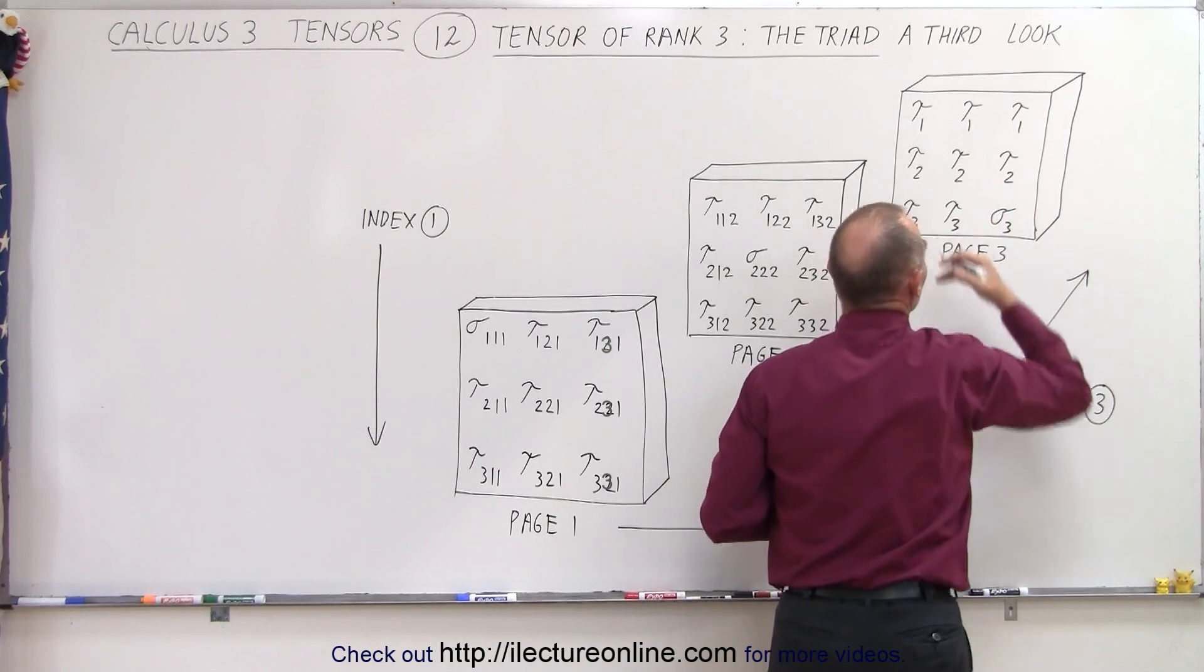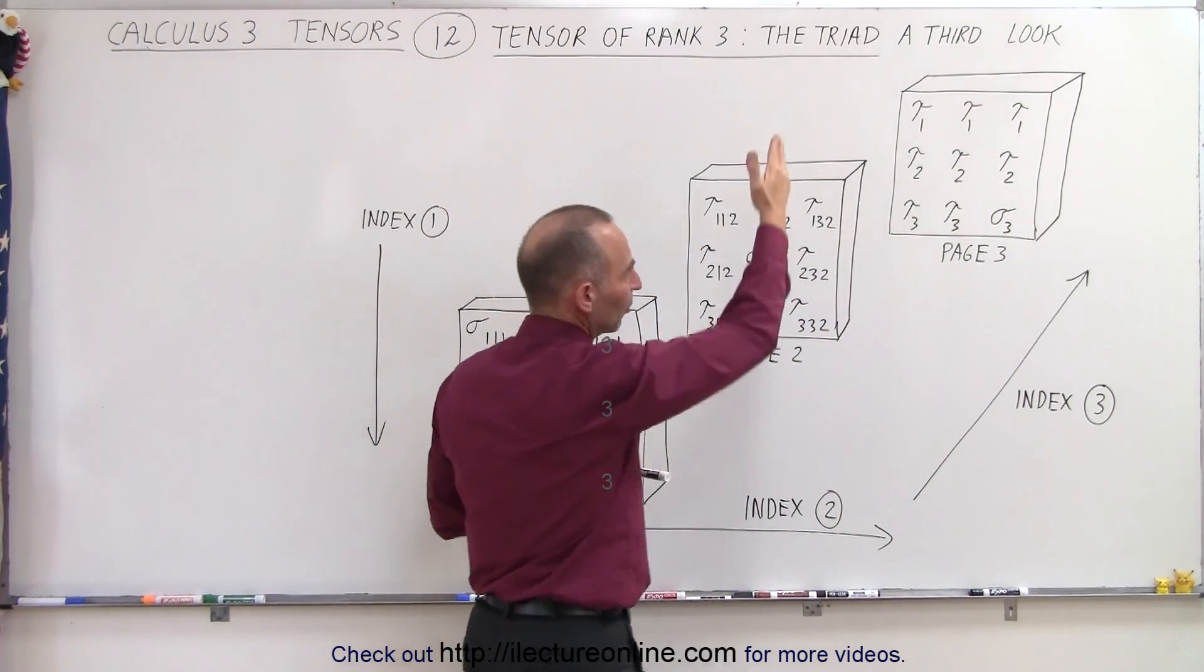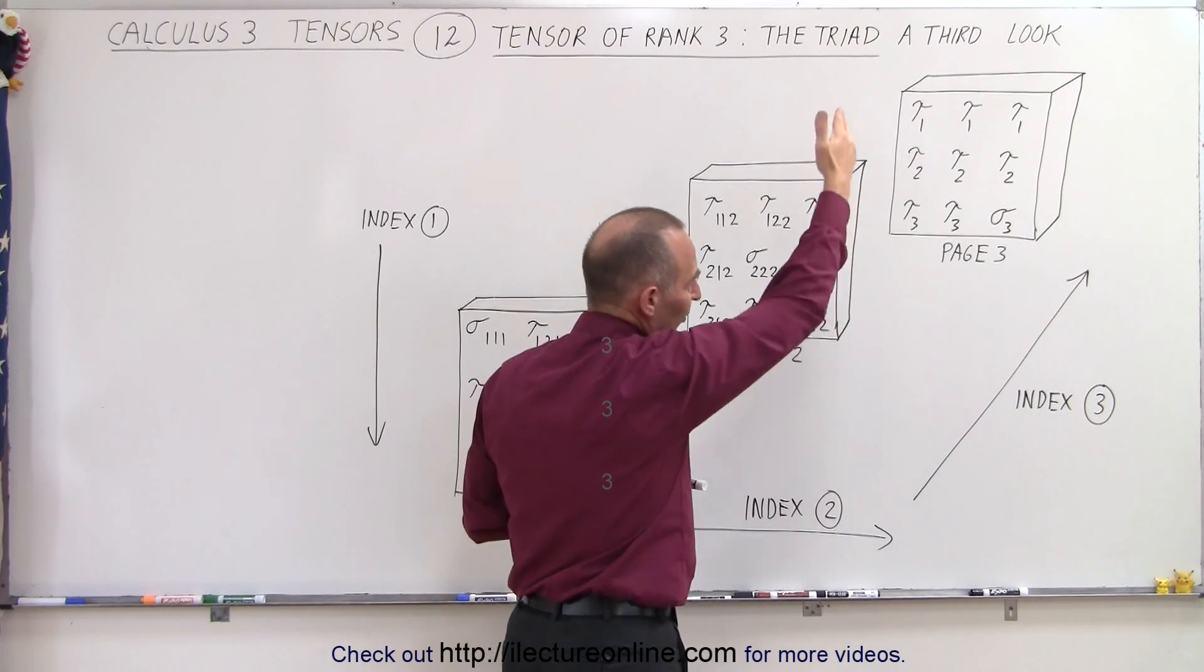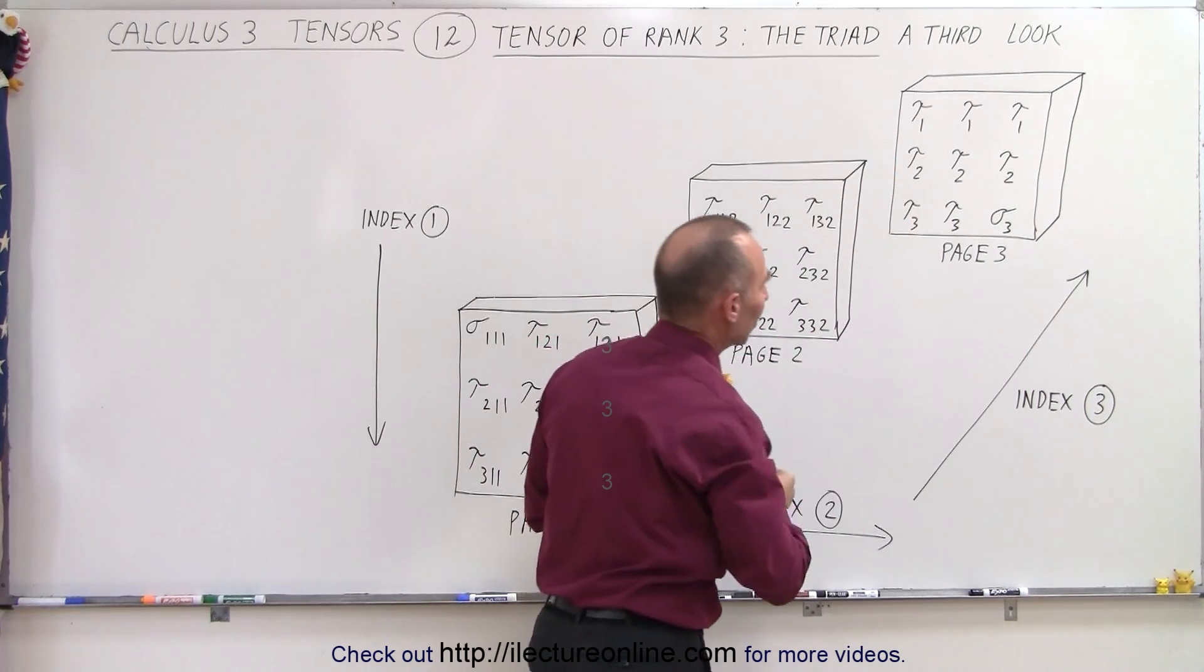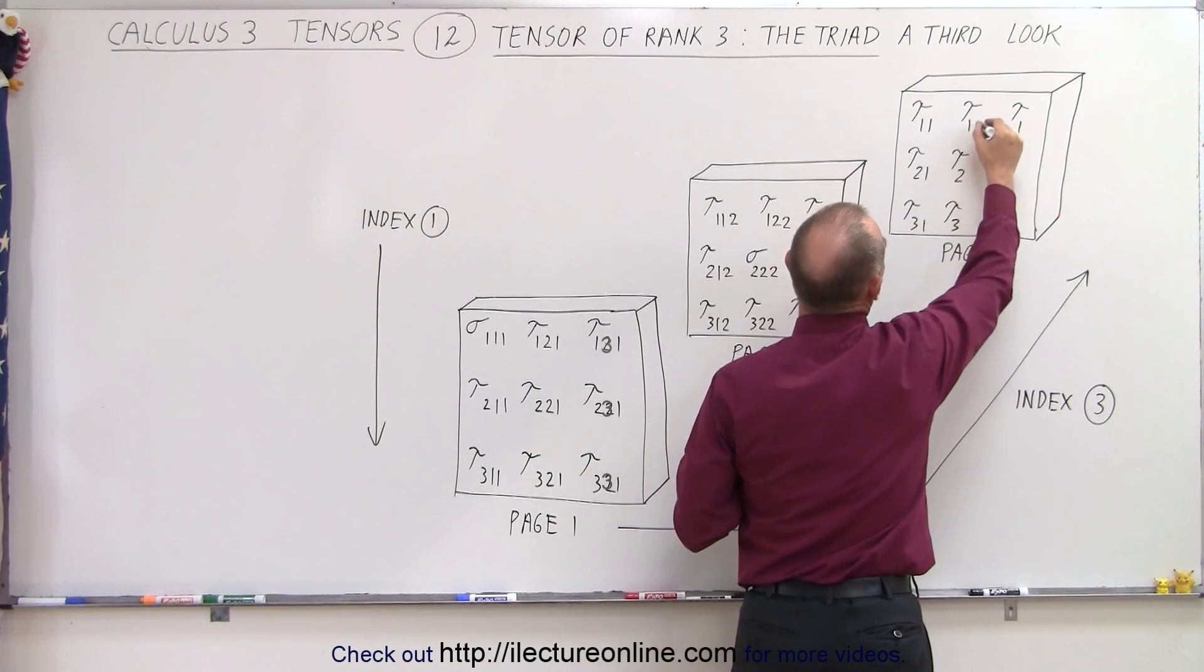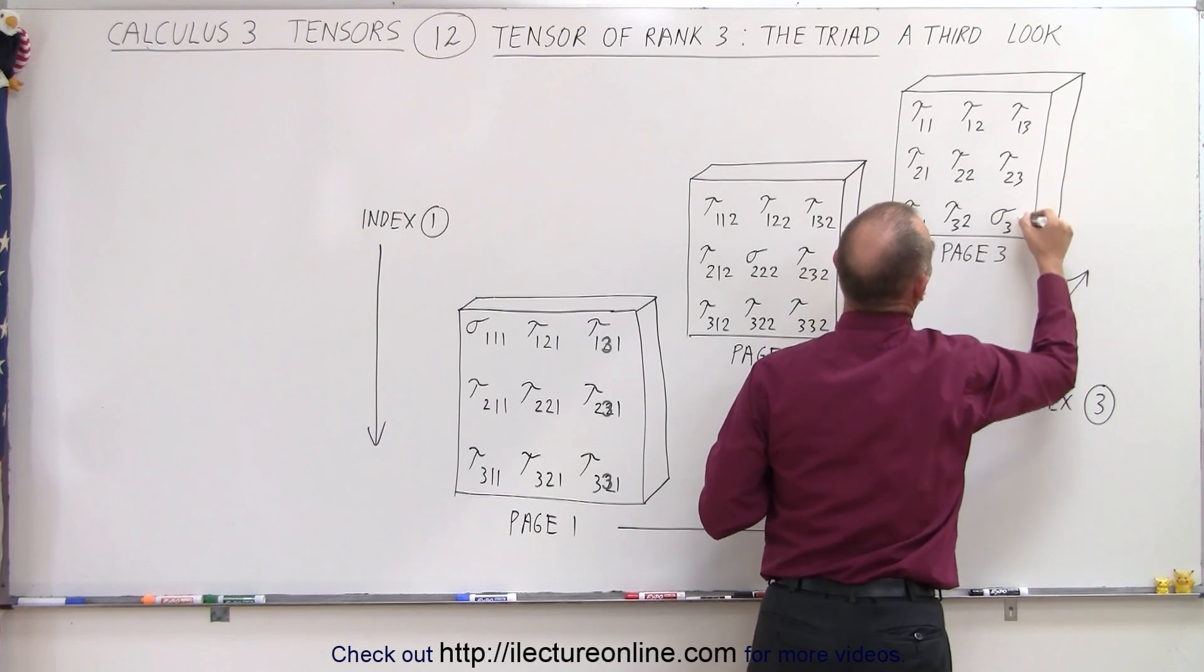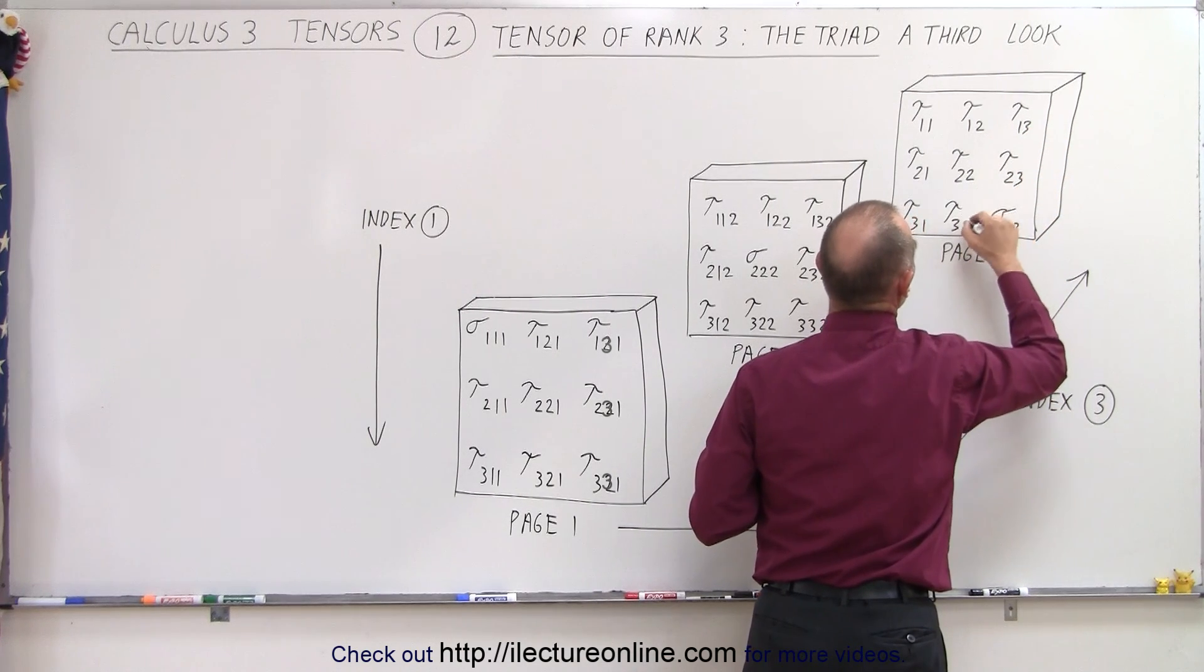Now with xyz or one, two, three, then we go from left to right. So the second index: the first three get a one, the second three get a two, the third three get a three. So that becomes one, one, one, two, two, two, and three, three, three.